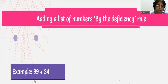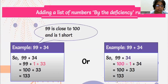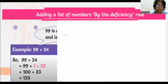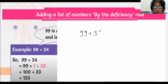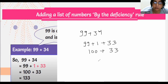Let me make you understand with the board. I think it will be easy for you all. Here it is written: 99 plus 34. So 99 is close to which number? 99 is close to 100. So we will write 99 plus 1. We will take this 1 from 34. When 34 gives this 1, it will become 33. Now 100 plus 33 is equal to 133.